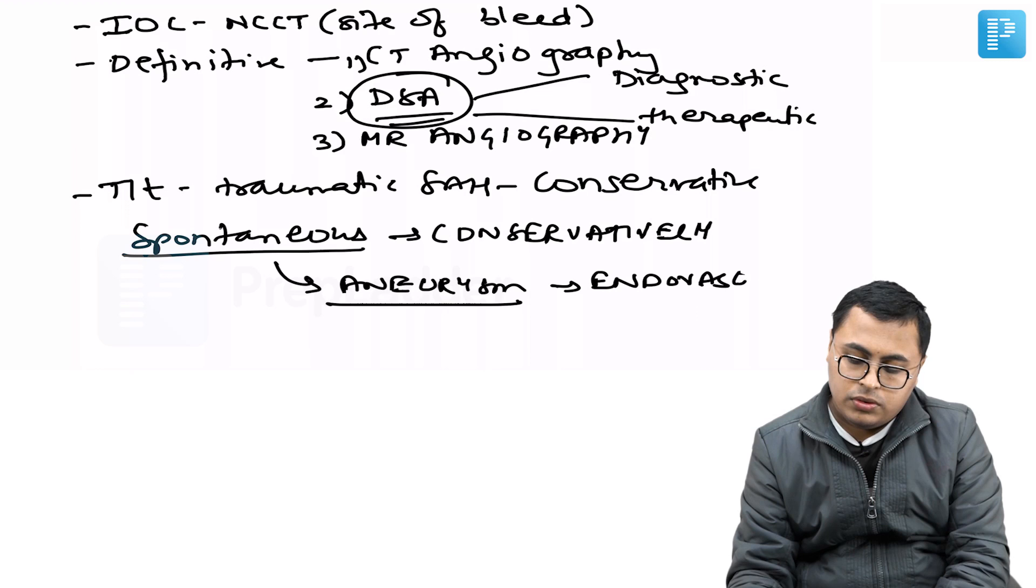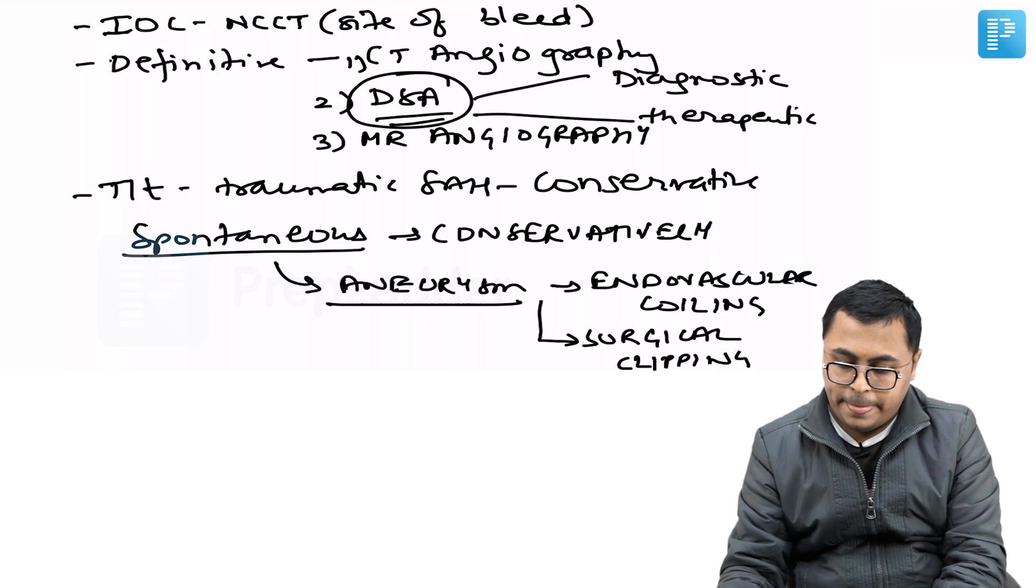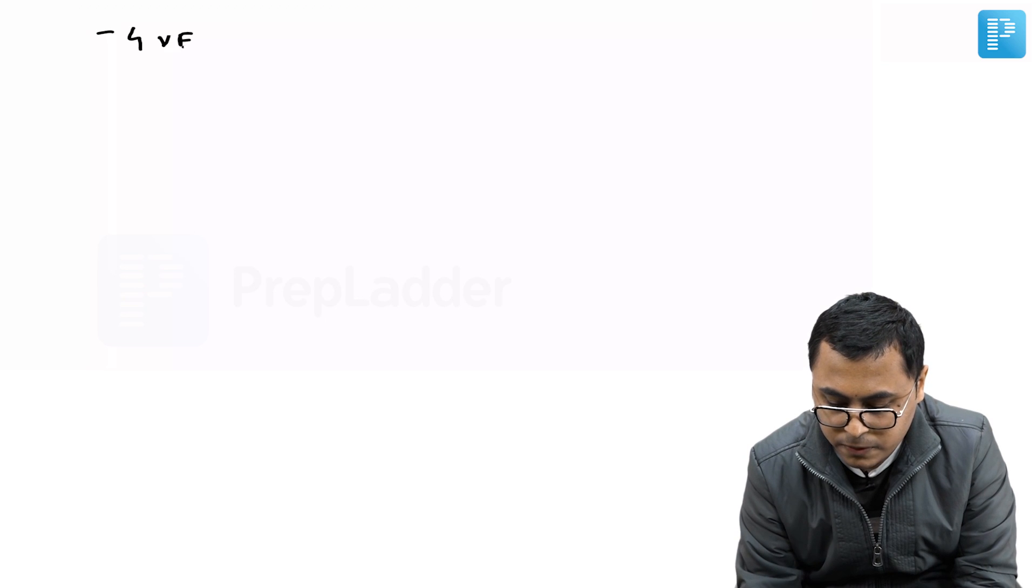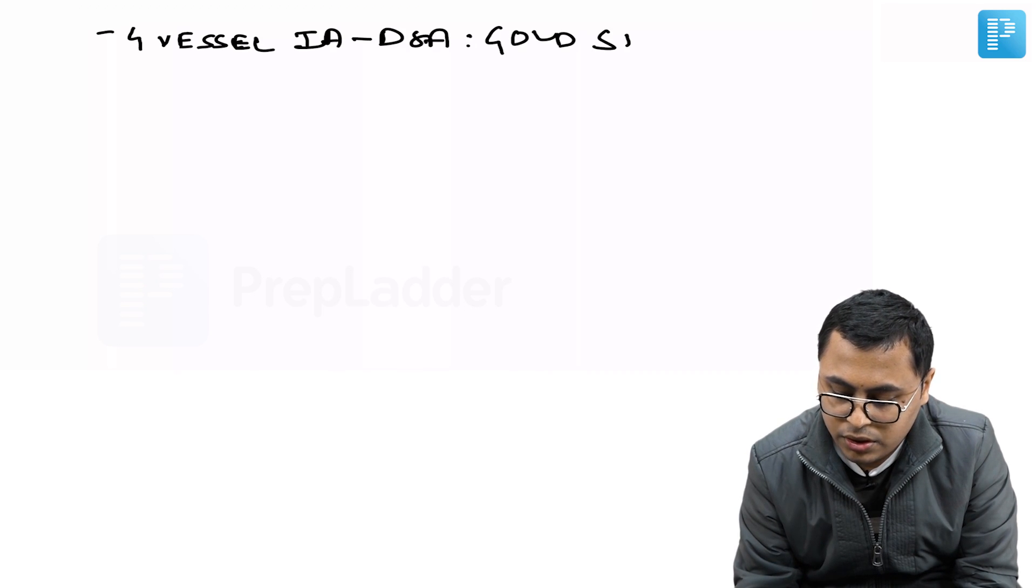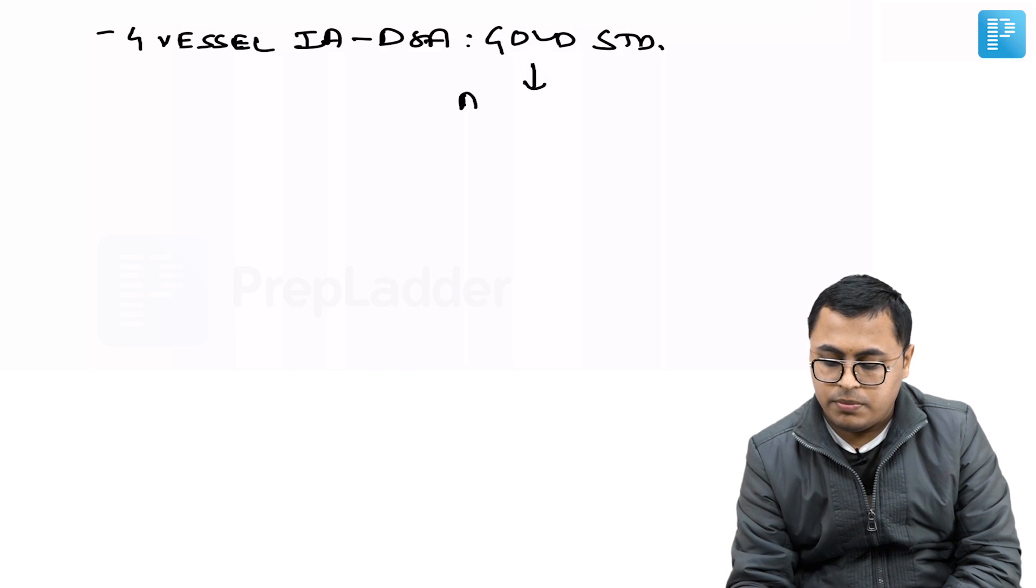Always remember, four vessel intra-arterial digital subtraction angiography is the gold standard for the identification of aneurysm. Very important, please remember.